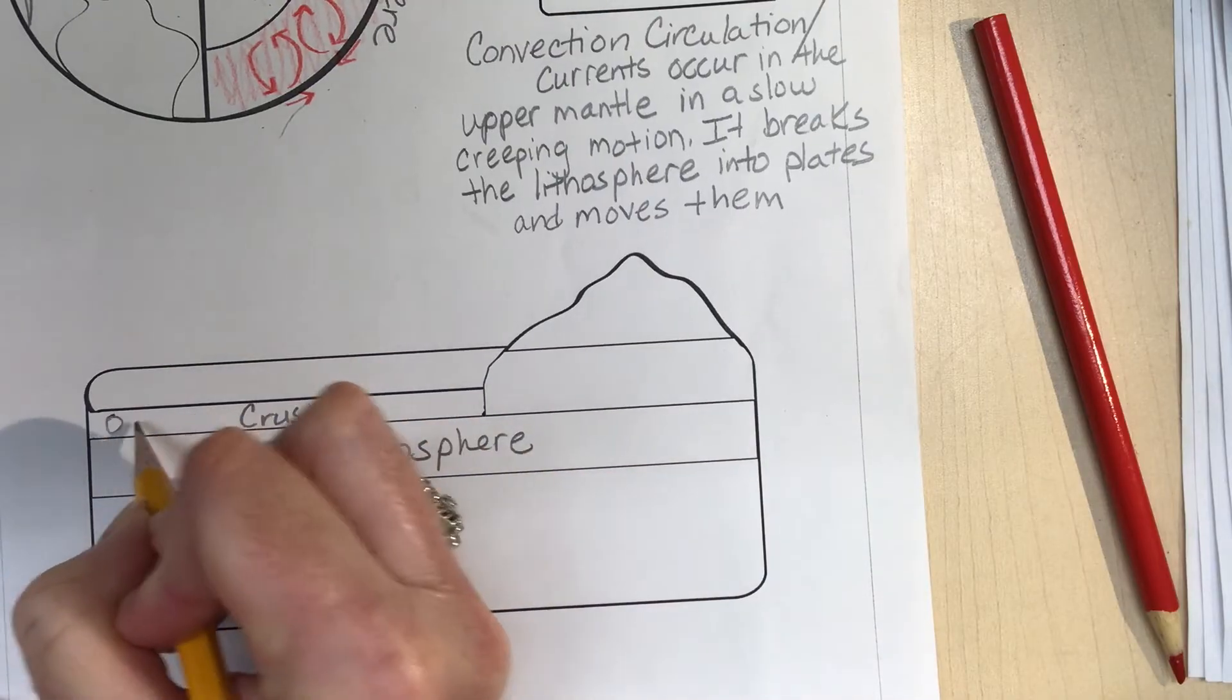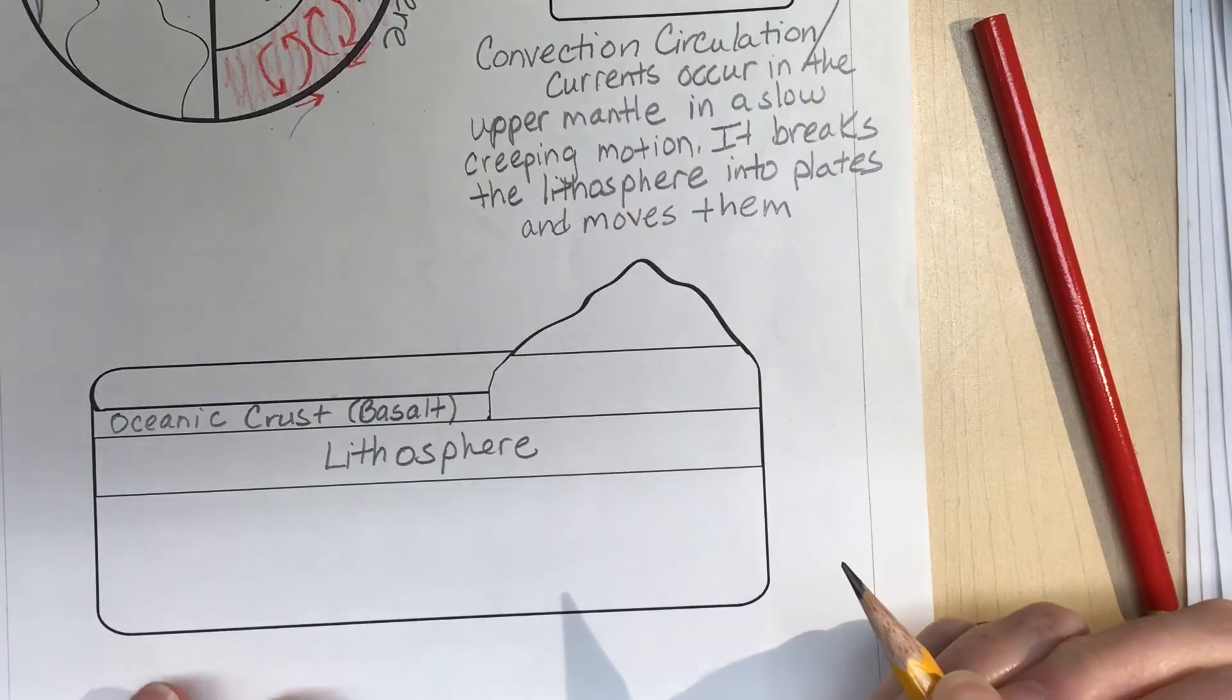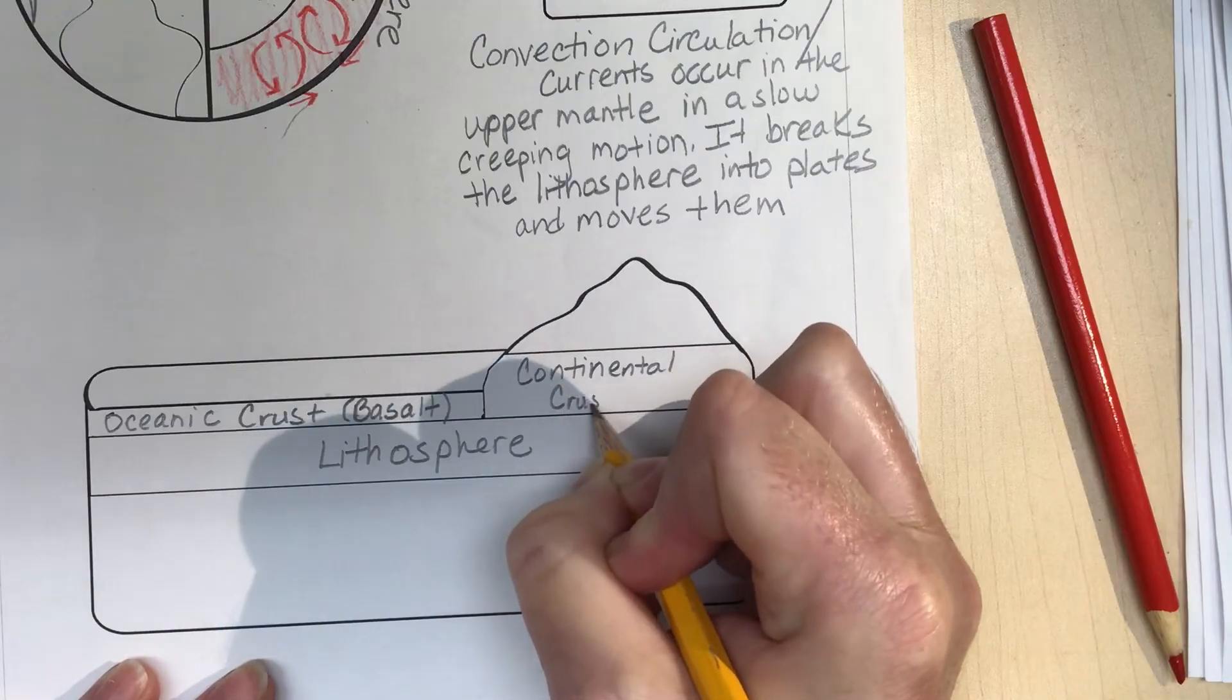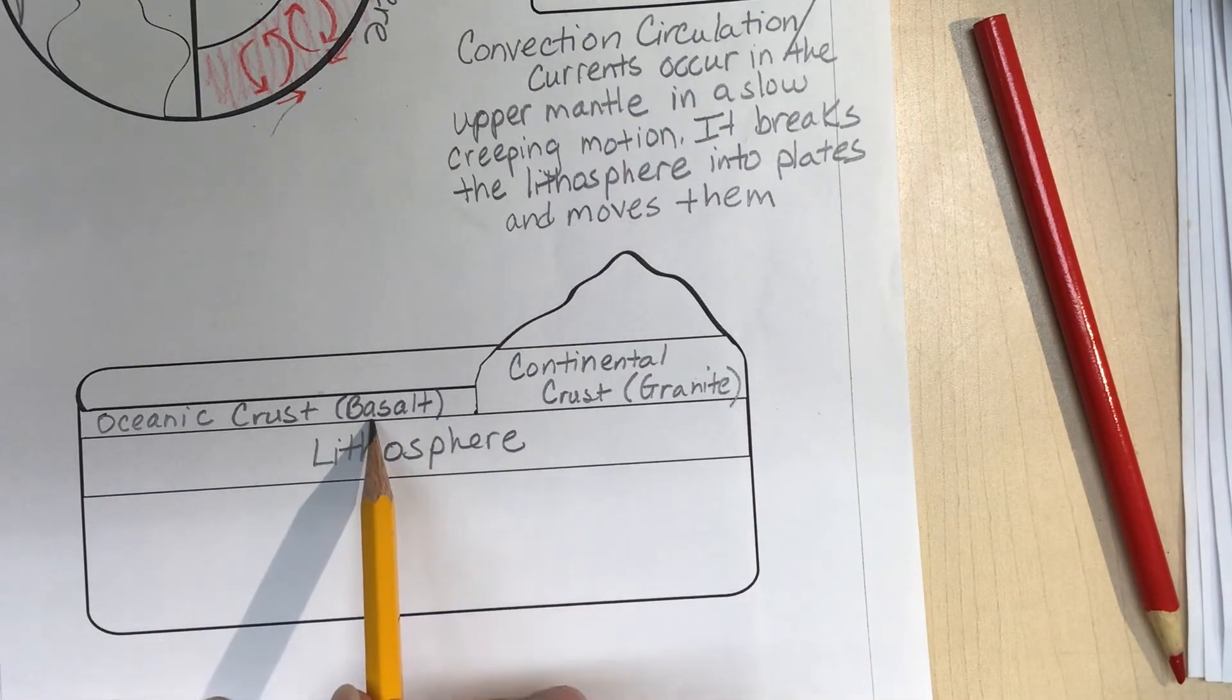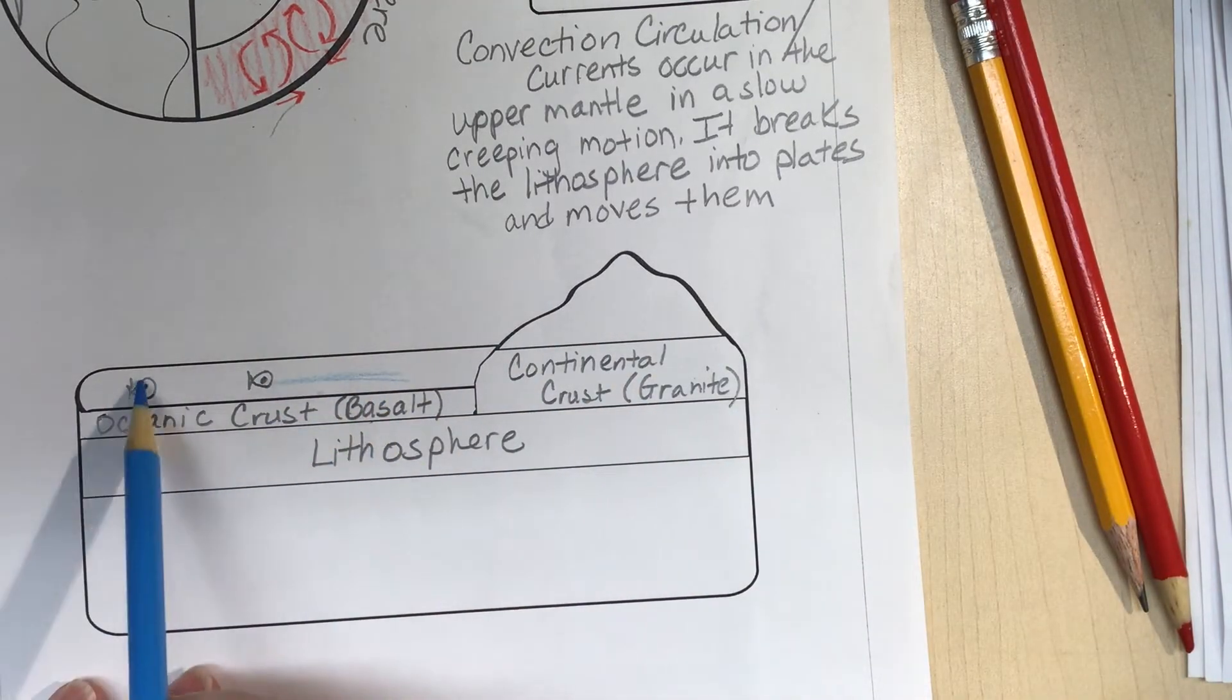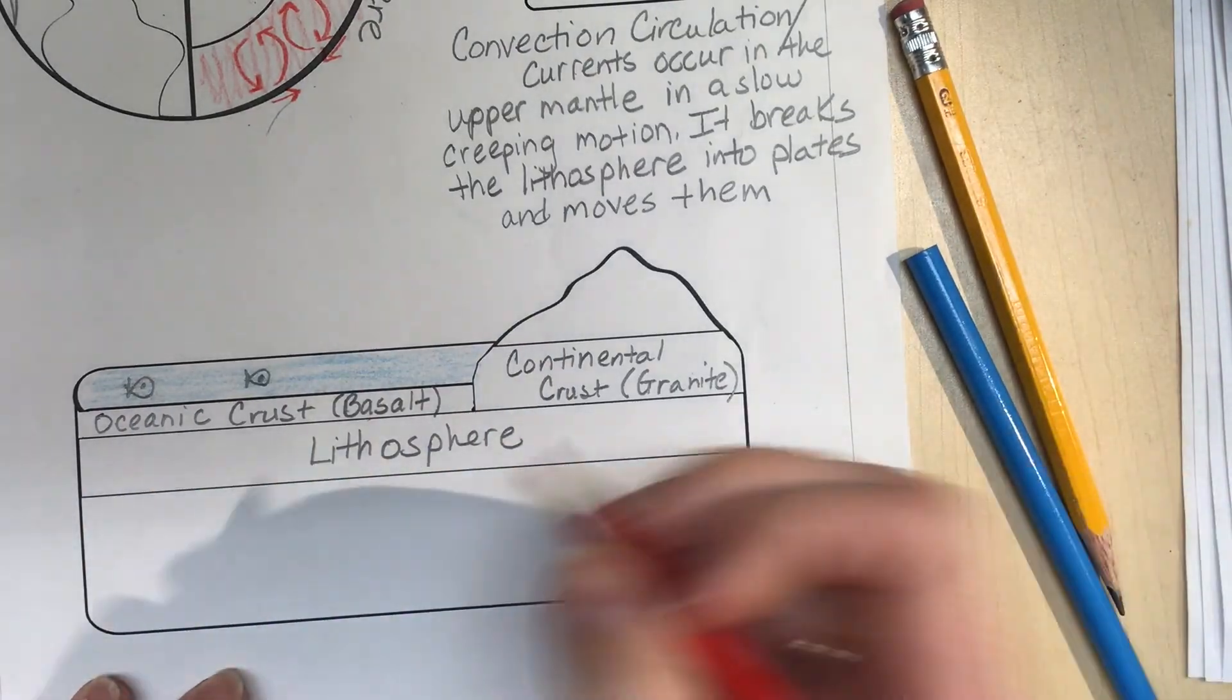This happens to be oceanic crust, and oceanic crust is made mainly of basalt - that's a type of rock. Over here we would have continental crust, and this would be made out of granite. Basalt is more dense than granite. I'm going to show little fishes over here to show that this is actually underwater, and I'm going to put my blue in here. The colors help your brain process this information a little bit better.